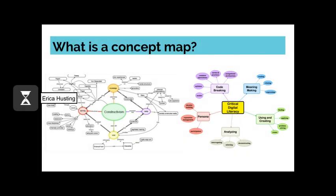One of the most important steps in the research process is defining your topic. Concept mapping is a brainstorming activity that can help you figure out what you already know about your subject and examine the relationships between those ideas. Ultimately, concept maps are graphical representations that are helpful for getting ideas down on a page.